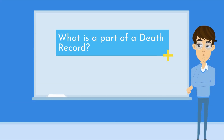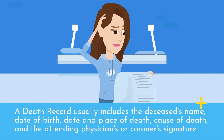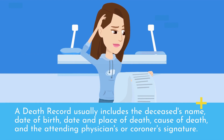What is part of a death record? A death record usually includes the deceased's name, date of birth, date and place of death, cause of death, and the attending physician's or coroner's signature.